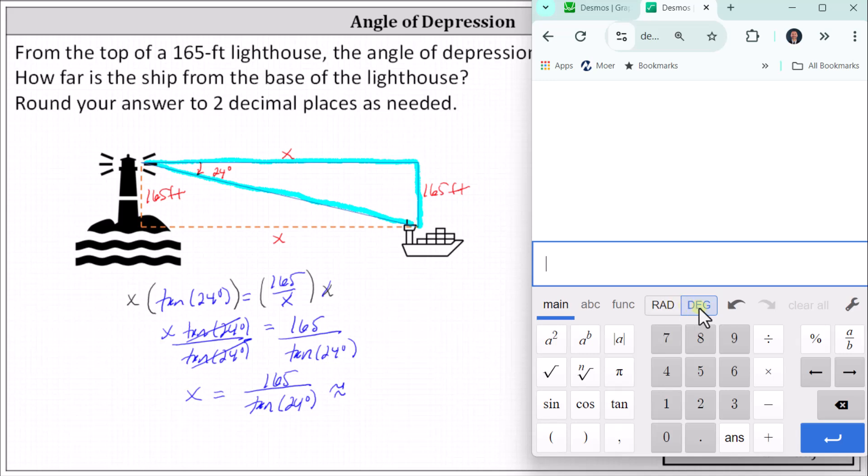The calculator is in degree mode. And now we enter 165 divided by tangent 24 degrees. Rounding to the hundredths place value, we have 370.60.